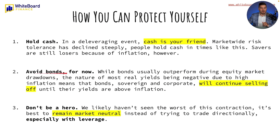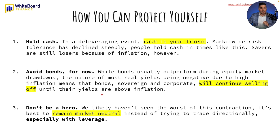Number two: avoid bonds for now. While bonds usually outperform during equity market drawdowns, the nature of most real yields being negative due to high inflation means that bonds — sovereign and corporate, including municipal and company bonds — will continue selling off until their yields are above inflation. Sovereign bonds are typically issued by nations.